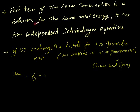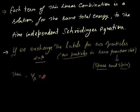Now I check whether this anti-symmetric eigenfunction is valid according to the Pauli exclusion principle for three particles. Each term of this linear combination is a solution for the same total energy to the time-independent Schrödinger equation. Now, suppose alpha equals beta — meaning two particles are in the same quantum state, recalling that quantum state means space and spin quantum state combined.